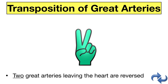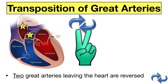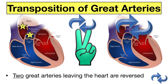The second cyanotic heart defect is transposition of great arteries. Hold up two fingers — you can even cross them to represent the transposition. Transposition of great arteries is when the two main arteries leaving the heart are transposed or reversed. The pulmonary artery normally leaves the right heart and goes to the lungs, and the aorta leaves the left heart and goes to the rest of the body. In transposition, the pulmonary artery arises from the left ventricle and the aorta arises from the right ventricle.